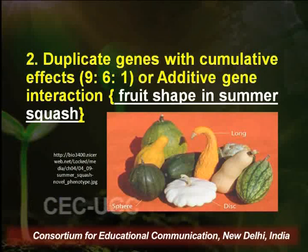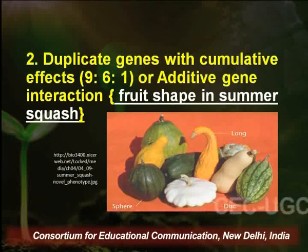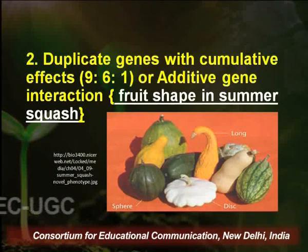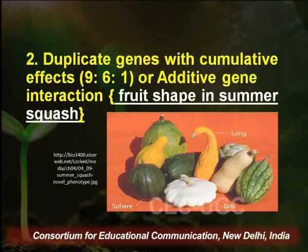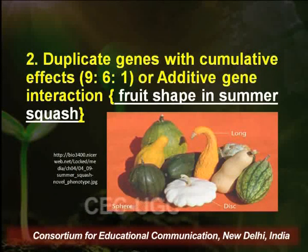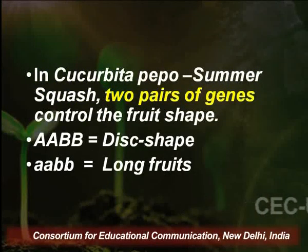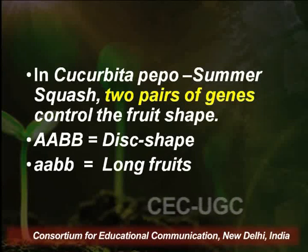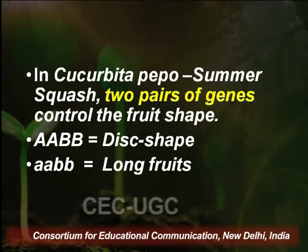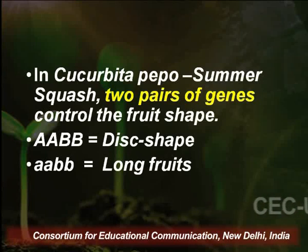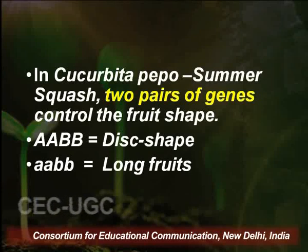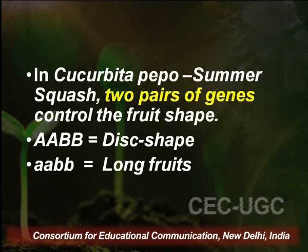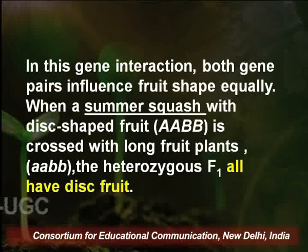Let us take another very important example: duplicate genes, also called additive genes. In the market, summer squashes or Cucurbita pepo have different shapes — they could be long, spherical or round, or disc-shaped. The genes controlling different shapes of the fruits can be described as: the homozygous double dominant (capital A capital B) is disc-shaped, whereas the homozygous double recessive leads to long fruits. In the market generally we have long fruits and spherical ones — we will see how the spherical ones come about.